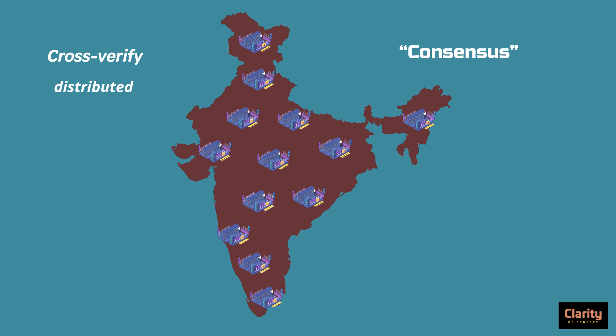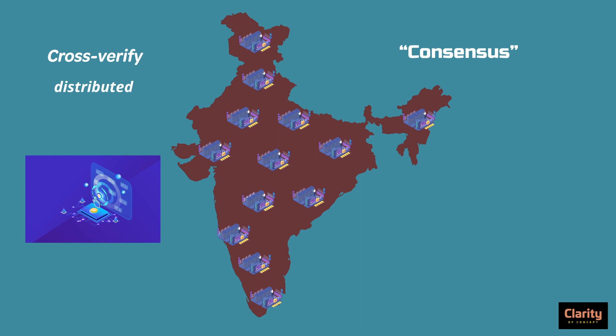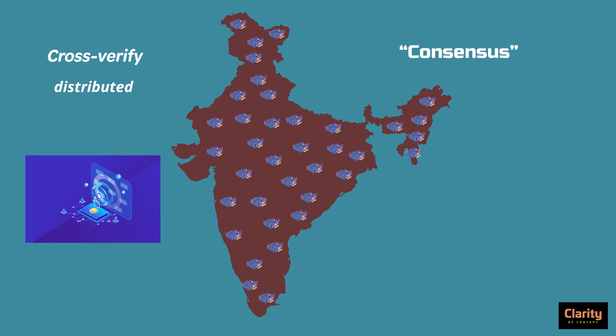Our example spoke about land records. Blockchain of cryptocurrencies contains records of financial transactions. In our example, we had just a few registries, but the cryptocurrency blockchain system contains thousands of such registries. They are called nodes and the registry is called a ledger. This is the meaning of distributed ledger in blockchain technology.